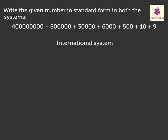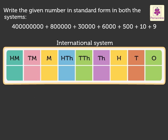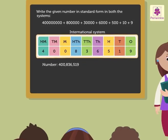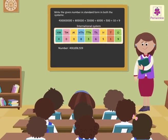As per the international system, the digits are placed in the place value chart like this. Thus, we get the number as 400,836,519. It was so much fun to learn writing numbers in standard form.